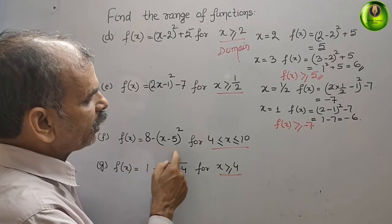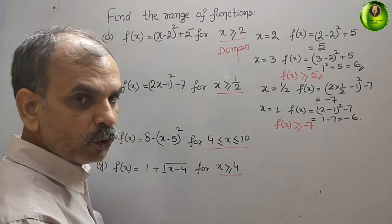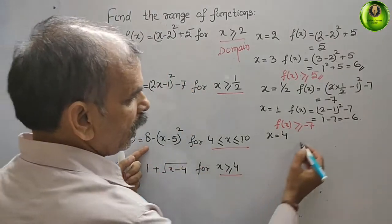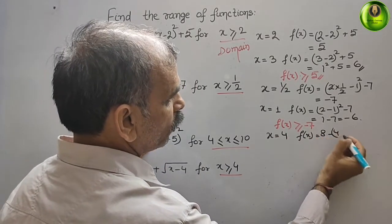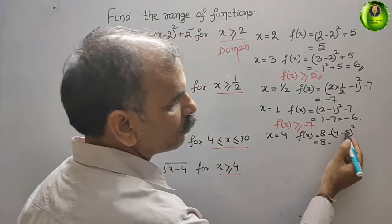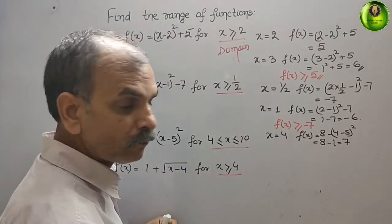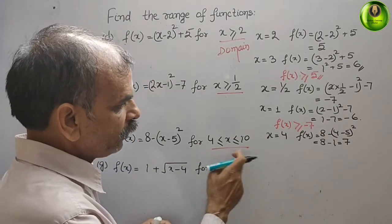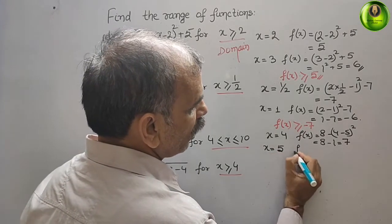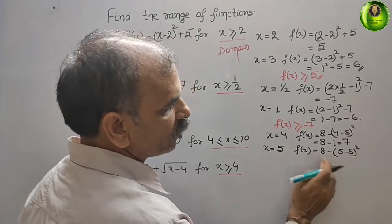Next question: f(x) = 8 - (x-5)², for 4 ≤ x ≤ 10. Take x = 4: f(4) = 8 - (4-5)² = 8 - (-1)² = 8 - 1 = 7. Next take x = 5: f(5) = 8 - (5-5)² = 8 - 0 = 8. So the value is 8 here.